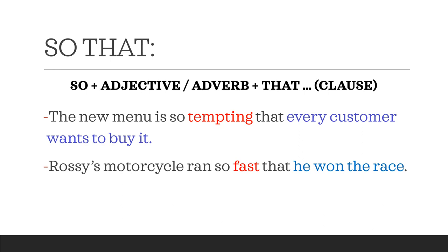The second example: 'Rosie's motorcycle ran so fast that he won the race.' Here, 'fast' is an adverb defining the run. Therefore, we use 'so' to talk about 'fast,' followed by 'that,' which is continued with a clause: 'He won the race.'